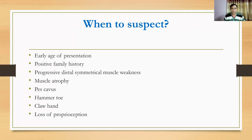When to suspect hereditary neuropathy? As a clinician, we have to suspect hereditary neuropathy if someone has neurological weakness in early age. The second important clue is a positive family history, because most hereditary neuropathies transmit to the offspring.